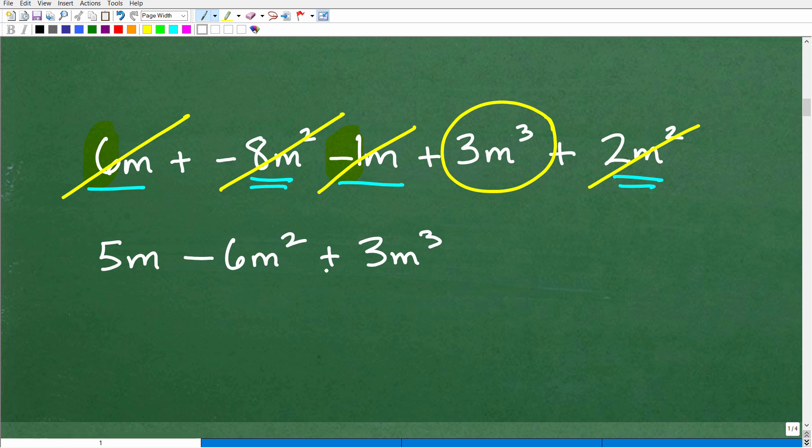So this is a three-term polynomial. We would call this a trinomial. And one of the things that you typically do is write your final answers in something called standard form. That's highest to lowest power. So this is the highest power. This is the second highest power. And this is the least highest power. So it's pretty typical to write these final answers in standard form. So 3M cubed minus 6M squared plus 5M is the best way, best format to leave your final answer in.